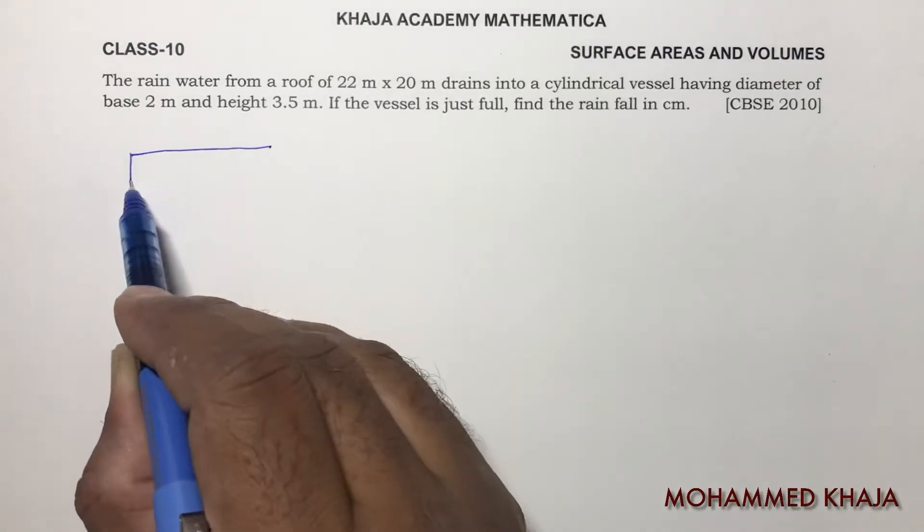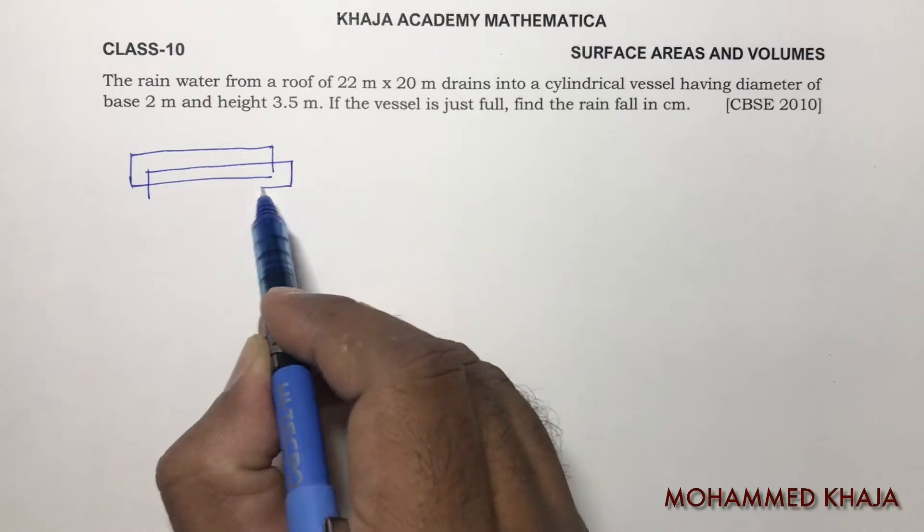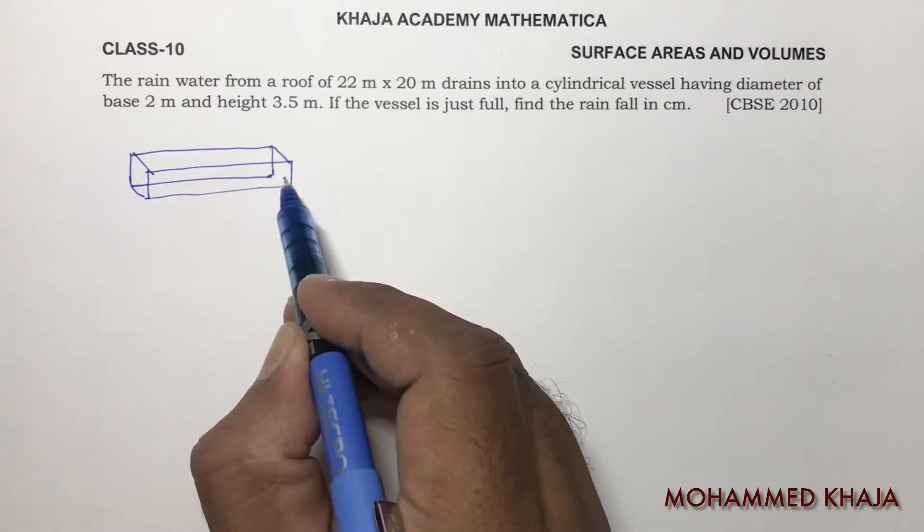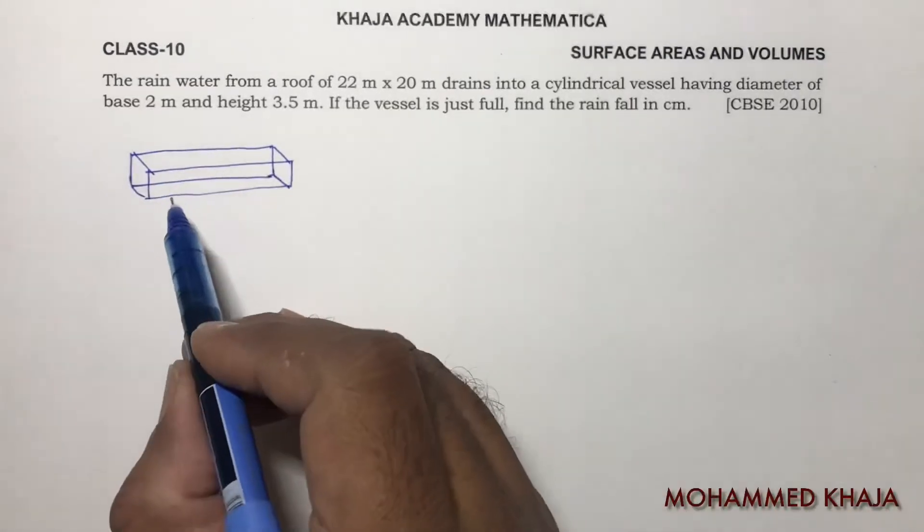We need to find the height of the cuboid. That will be the rainfall, because rainfall is calculated by deciding the height of the standing water. So here, length is 22 meters, breadth is 20 meters, and I need to find height.